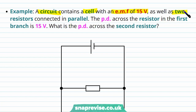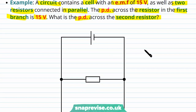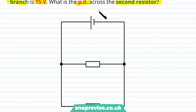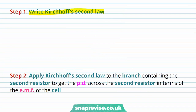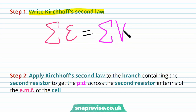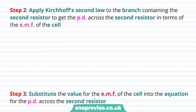Example: a circuit contains a cell with an EMF of 15 volts as well as two resistors connected in parallel. The potential difference across the resistor in the first branch is 15 volts. What is the potential difference across the second resistor? The cell has an EMF of 15 volts, and we've got a parallel circuit with two loops, each containing one resistor. The second resistor has an unknown potential difference that we want to find. Step one: write Kirchhoff's second law — for any closed loop, the sum of the EMFs equals the sum of the potential differences of the components in that loop.